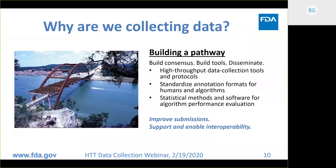Why are we collecting this data? We want to collaborate with the community and build consensus methods and tools, and disseminate thoughts and procedures for doing data collection that could support algorithms — whether it's protocols and annotation formats that can be used across platforms, from annotations from humans or algorithms. We also want to do research on statistical methods and create software so that we can all be evaluating the same things transparently. Ultimately, the goal is to improve submissions and to support and enable interoperability across systems.